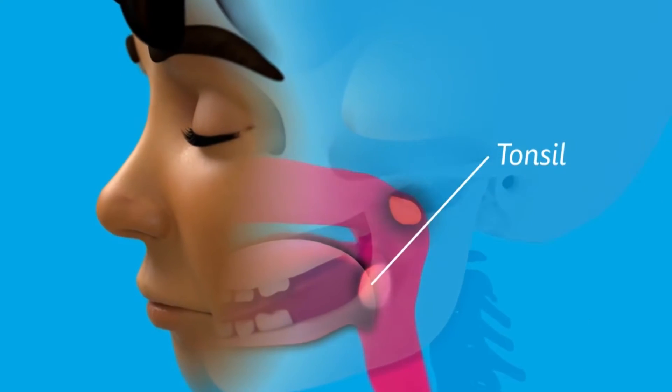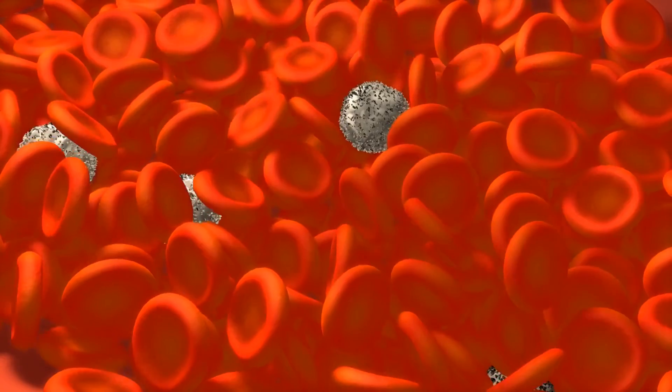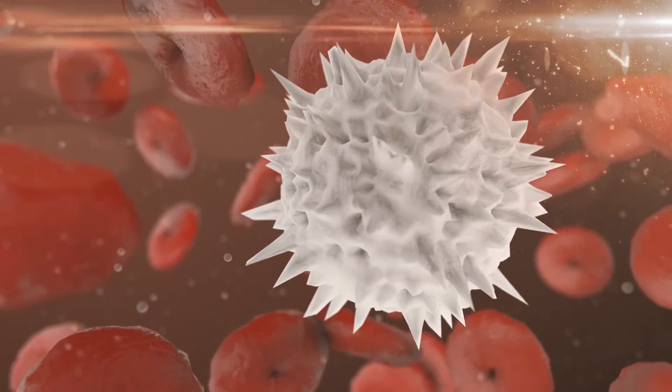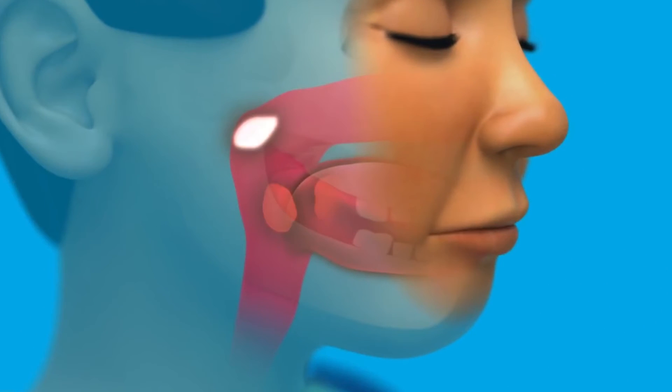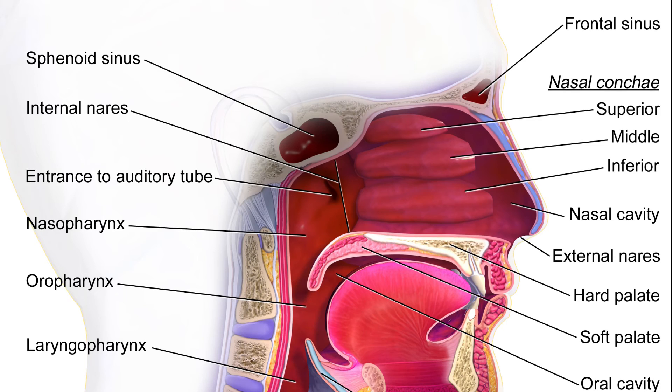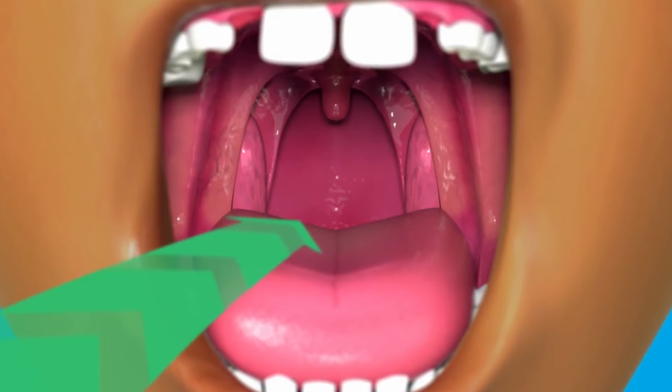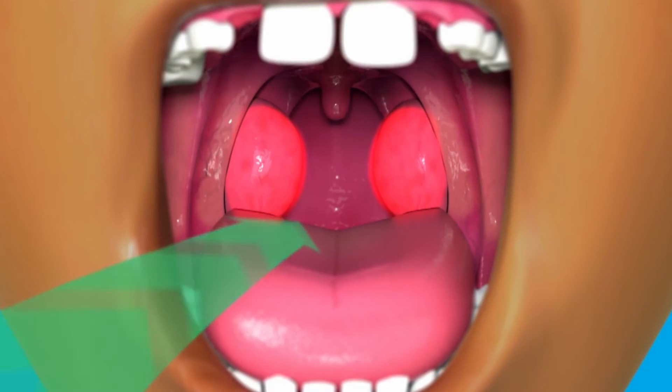In the back of the mouth, there are tonsils. These produce lymphocytes, a type of white blood cell, and antibodies. They have a strategic position, hanging down from a ring forming the junction between the mouth and pharynx. This enables them to protect against inhaled and swallowed foreign bodies.